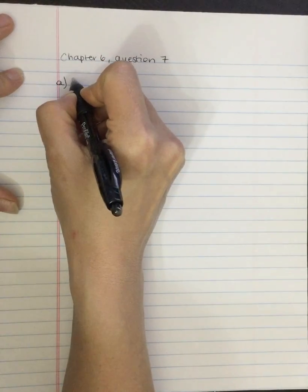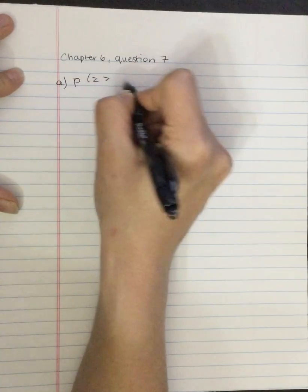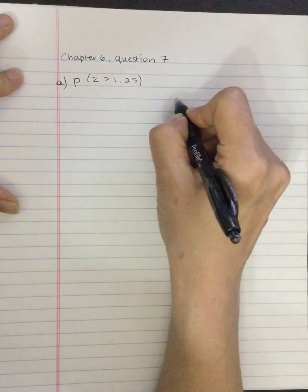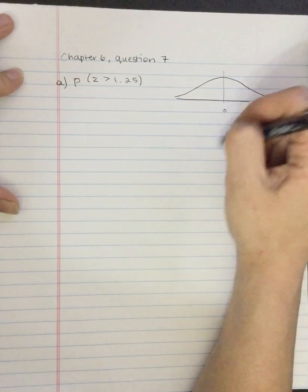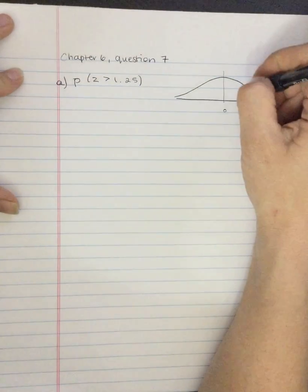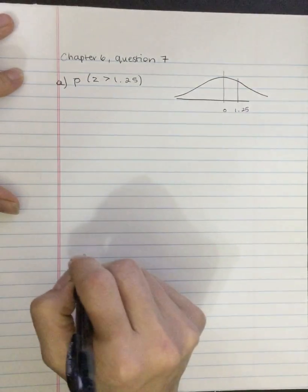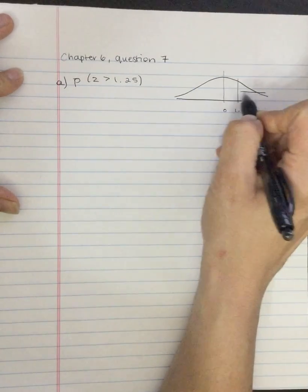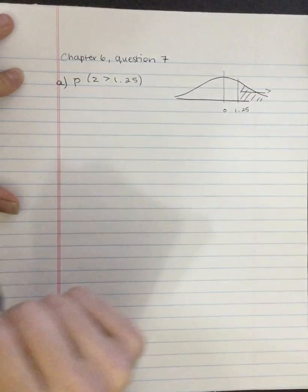A, the probability that Z is greater than 1.25. So let's draw it out. Here's a Z-score of 0. Probability of 1.25 is over here. And the question asks, it's greater than, so we want this part. We want going this way. We want this piece. So that's the tail.